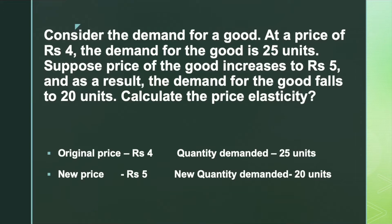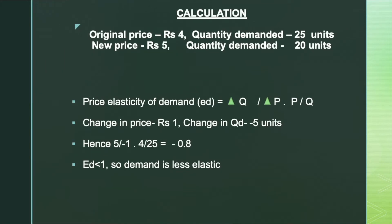First, let's identify the initial price and initial quantity demanded. The initial price is Rs 4 and the initial quantity demanded is 25 units. The new price is Rs 5 and the new quantity demanded is 20 units. The formula for price elasticity of demand is the ratio of the percentage change in quantity demanded to the percentage change in price, which is (ΔQ/ΔP) × (P/Q).